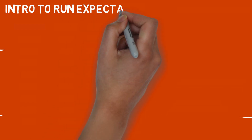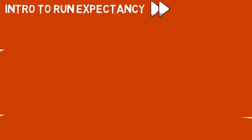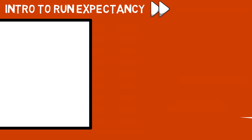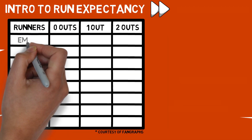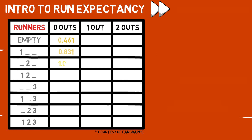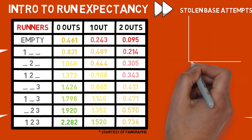First and foremost, we are going to cover what run expectancy is. Since we just covered this same topic in the last video, we're going to breeze through it a little quicker this time. If you want a more in-depth description, check out last week's video — links as always in the description down below. The run expectancy matrix is a table that identifies all 24 outs-and-runner-position scenarios, and it puts a value to how many runs you can be expected to score in any of these situations. Today, we will be looking at it through the lens of stealing bases.